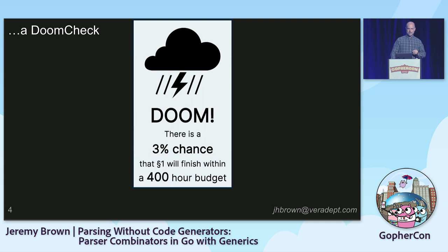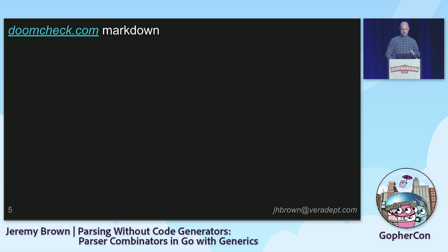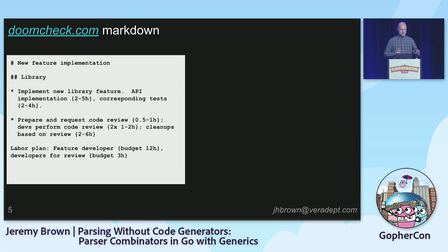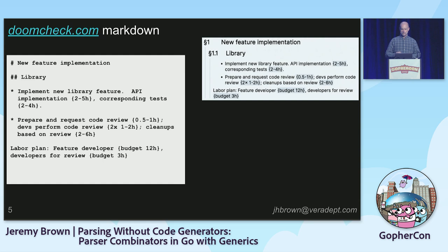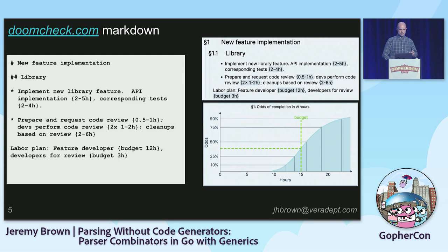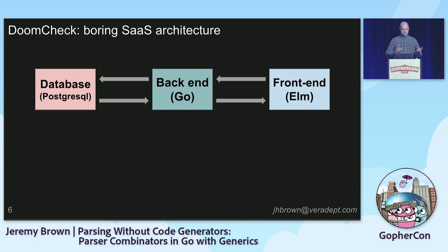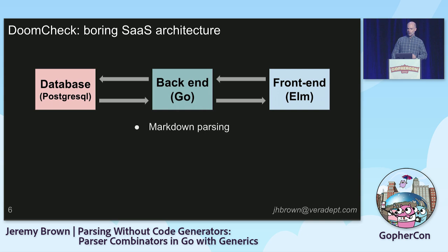The reason for this talk is that DoomCheck is designed to write the entire work plan in an extended markdown format. Estimates go in curly braces, as ranges. We want to render this markdown as a good-looking document, but we also have to pull out all the numbers to do the math to compute the probability of success, whether you want them in graph format or the club-to-the-head format. DoomCheck is implemented as a really boring software as a service — a database on the back end, Go in the middle, and Elm on the front end.